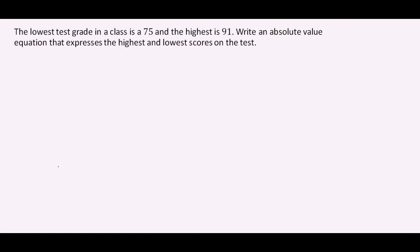Next question. The lowest grade in a class is a 75 and the highest is a 91. Write an absolute value equation that expresses the highest and lowest scores on the test. We let x be the grade of a student. The highest grade is 91 and the lowest grade is 75.